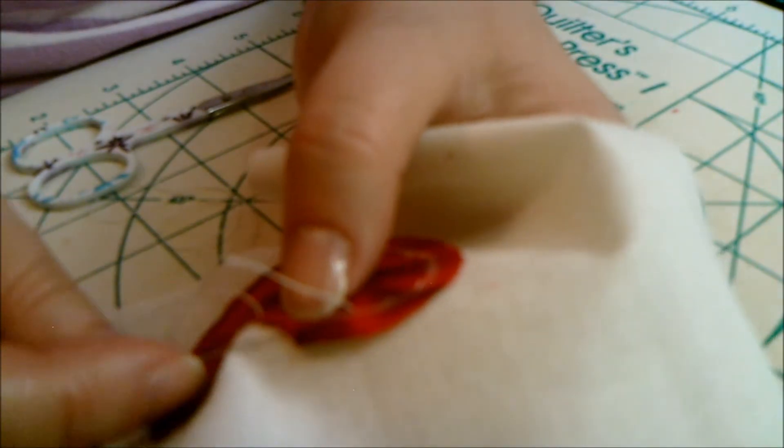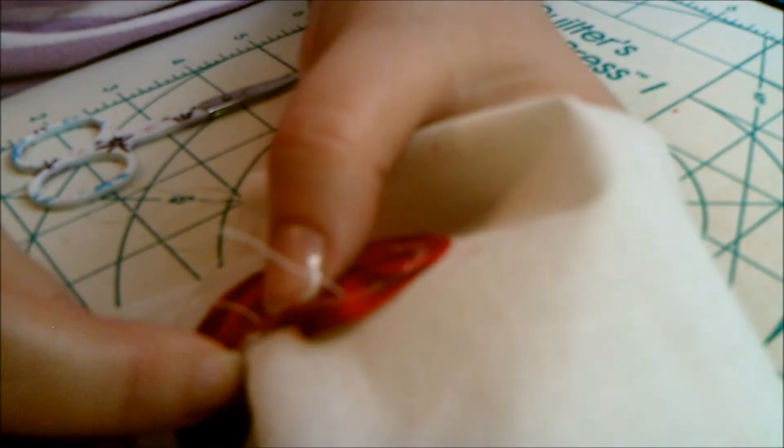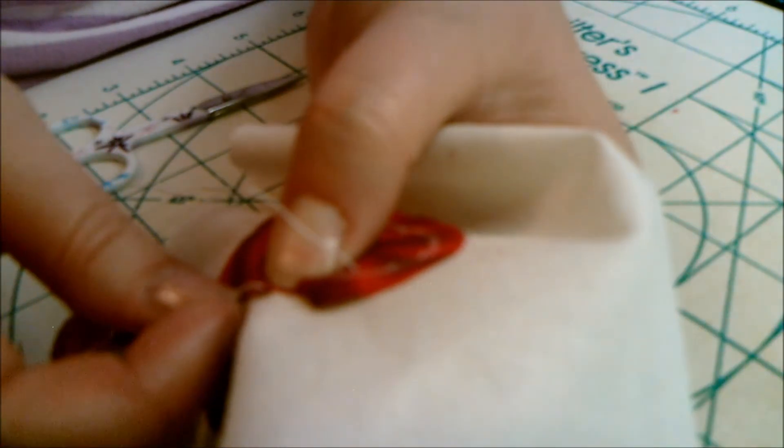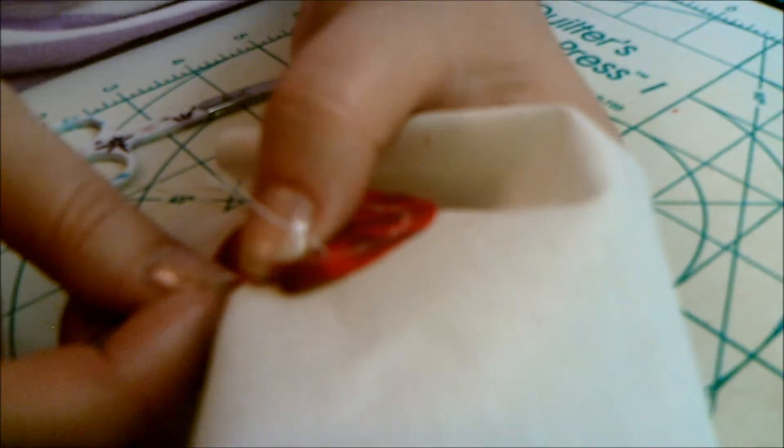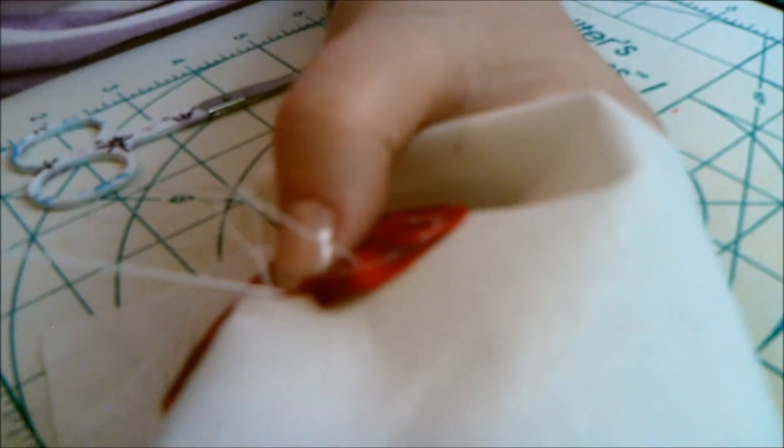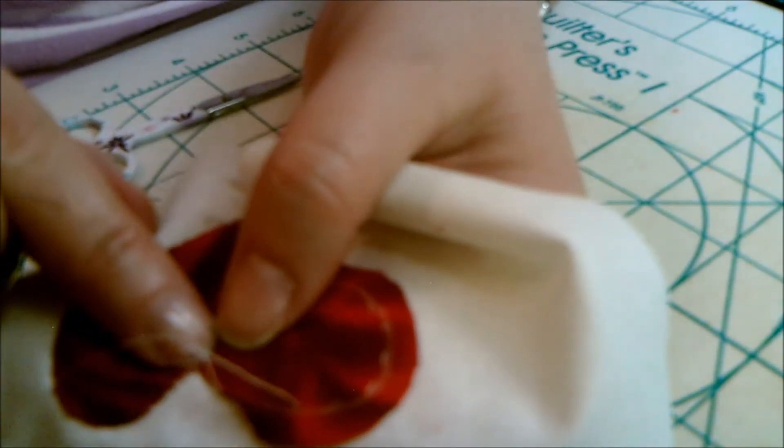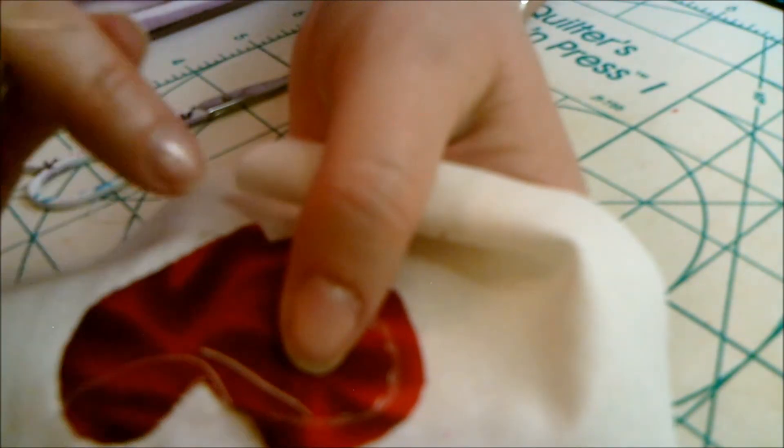And then you just keep right on appliquéing until you come to another inside point, or outside point, or whatever it is you're doing. But just keep right on working along your piece. That's how you do an inside, or a valley, that's the inside part of a heart.